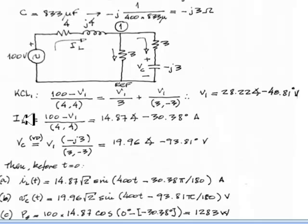100 minus V1, given by this expression, divided by the impedance of the branch, 4.4. That is 14.9A with negative 30 degrees. That is the current in the inductor, flowing from left to right, as a phasor.